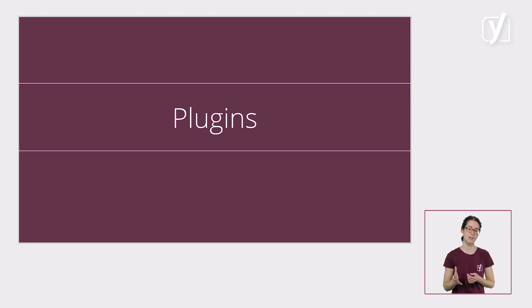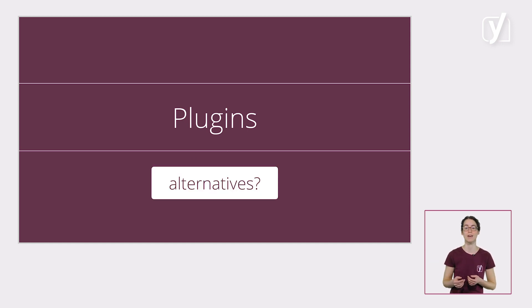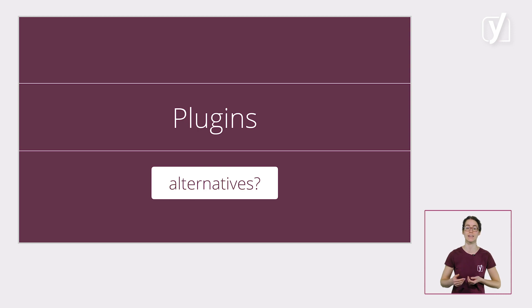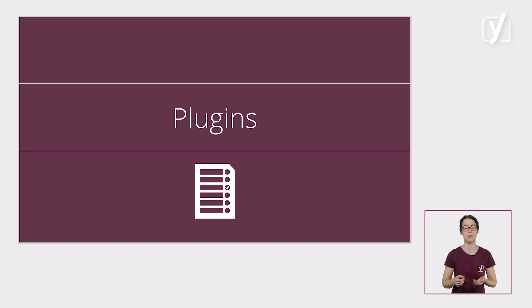What if they don't? What if you have plugins that conflict with the block editor? Well, then you should look for an alternative. Check if there are blocks or Gutenberg plugins available for the functionality you need, that you could use instead of the conflicting plugin. Make sure to keep a list of plugins that don't work correctly, so you can remove them from your site when you're going live with the block editor.